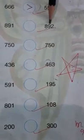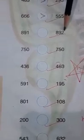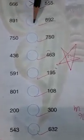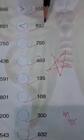Now 891 and 892. The numbers in the 100s and 10s places are the same, but the numbers in the 1s place are different. This is 1 and this is 2, and 2 is greater than 1. So 891 is less than 892.